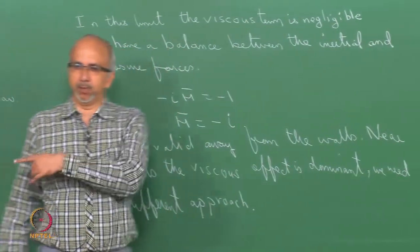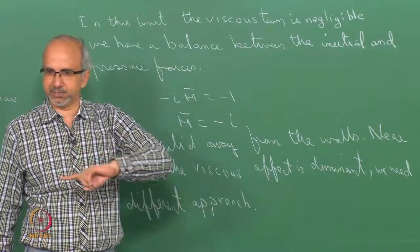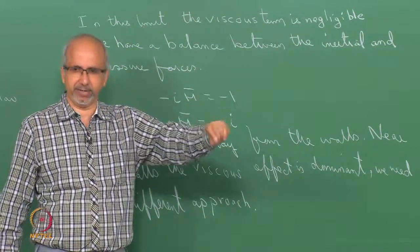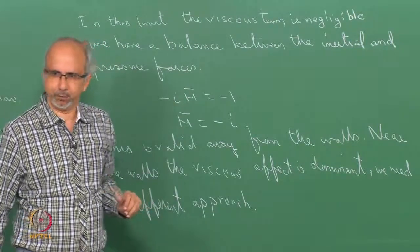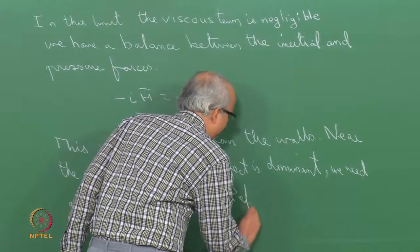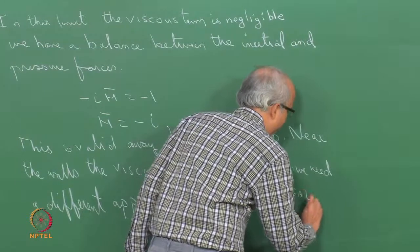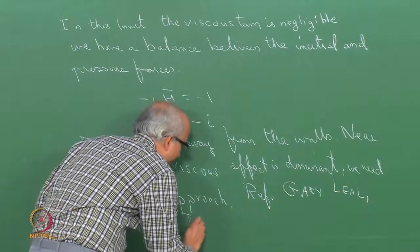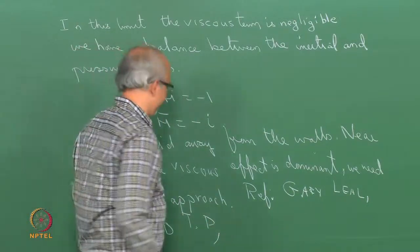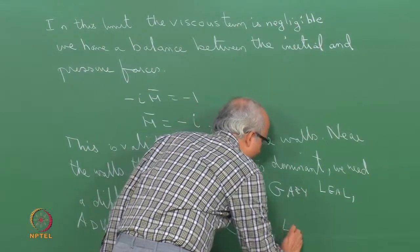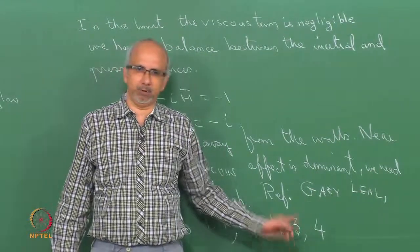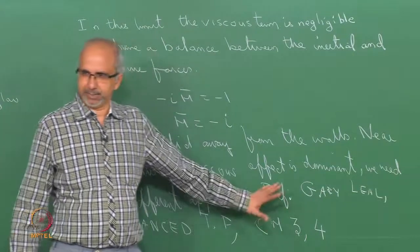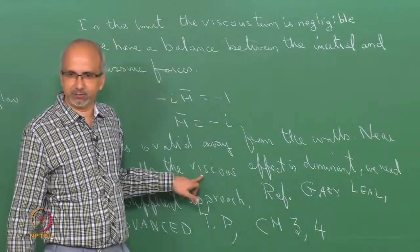This particular problem of pulsatile flow in a circular channel is discussed in Gary Leal's book on Advanced Transport Phenomena. I try to stick to the notation he uses so that when you go and read the book it will be easy to follow. I suggest you look at chapters 3 (towards the end) and chapter 4 (towards the beginning): chapter 3 covers the complete solution we discussed and chapter 4 covers the asymptotic solution. Leal also discusses how to take into account the viscous effect near the walls.